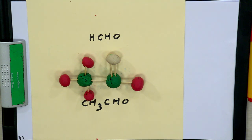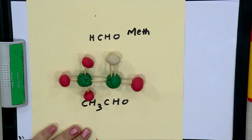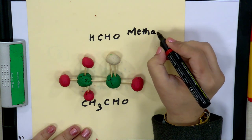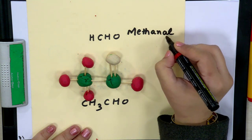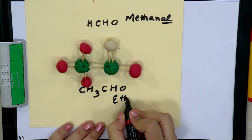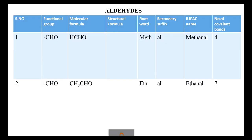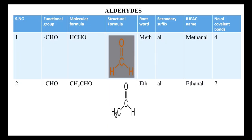When writing the names of these compounds: the first member has one carbon, so the root word is 'meth'. It is all derived from single bonds, so the primary suffix is 'an', and the secondary suffix is 'al' — giving methanal. For the second member, it is 'eth-an-al' — ethanal. You can form a table with the functional group, structural formula, root word, and number of bonds to summarize the aldehyde series.